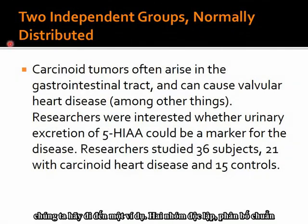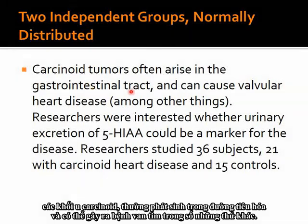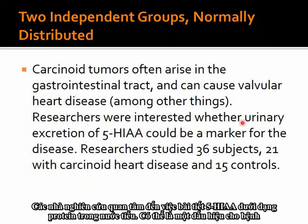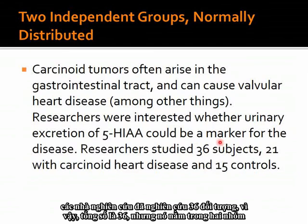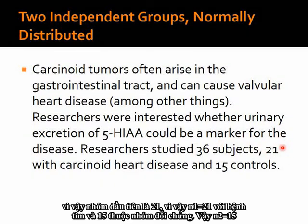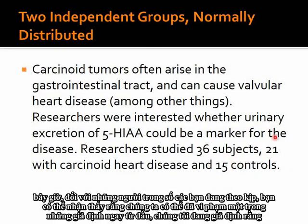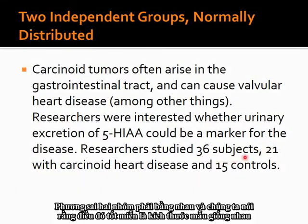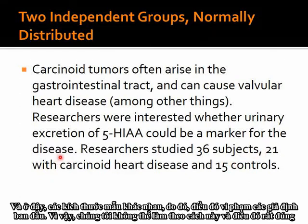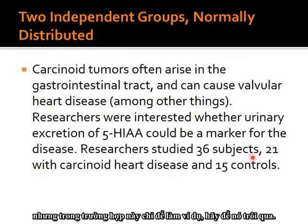Let's look at an example: two independent groups, normally distributed. Carcinoid tumors arise in the gastrointestinal tract and can cause valvular heart disease. Researchers were interested whether urinary excretion of 5-HIAA could be a marker for the disease. Researchers studied 36 subjects: n1 equals 21 with carcinoid heart disease, and n2 equals 15 as controls. Note the sample sizes are not equal, which means we may be violating the equal variance assumption, but for this example we'll proceed.